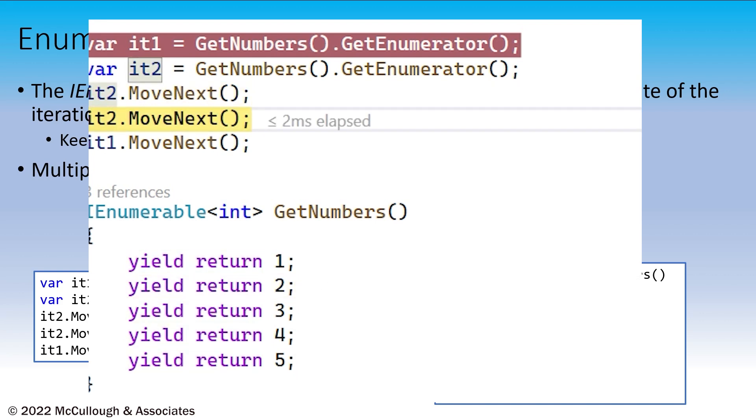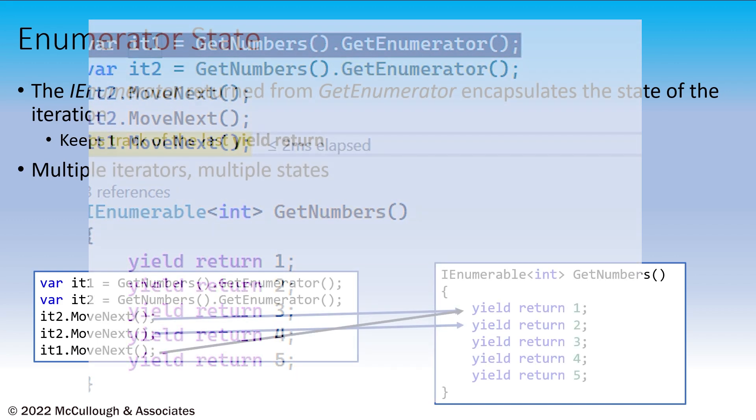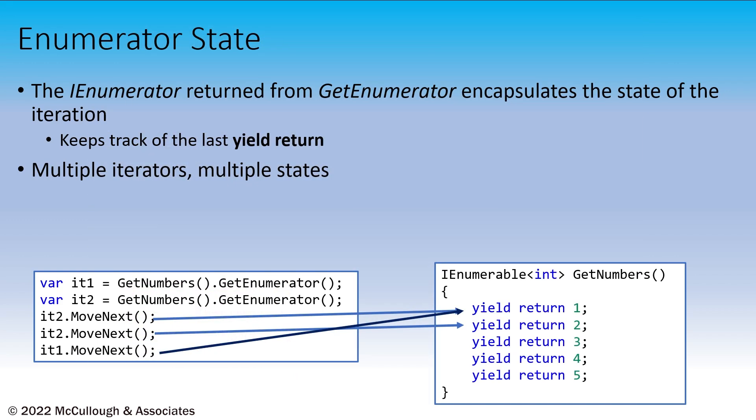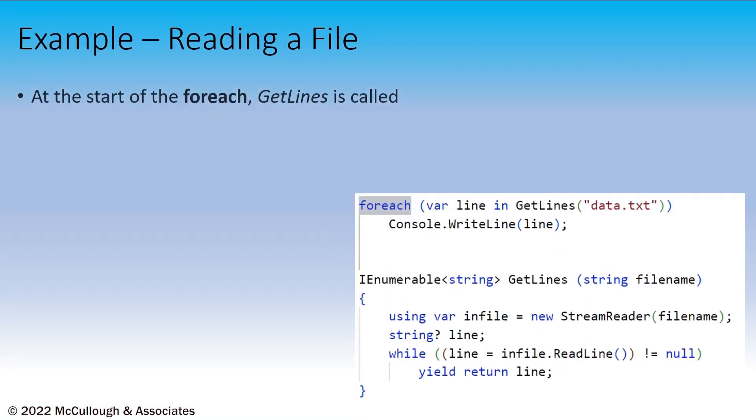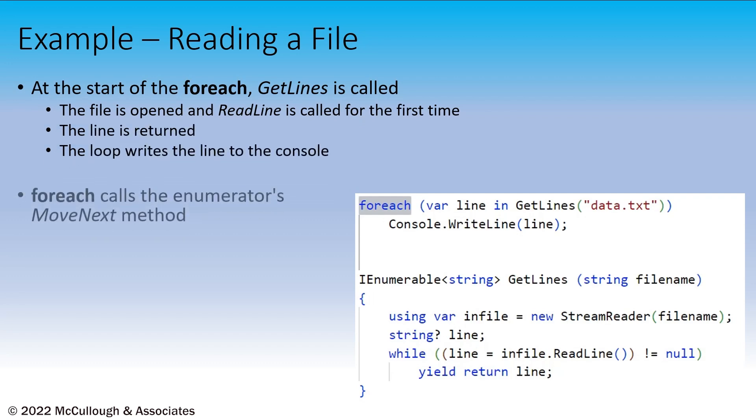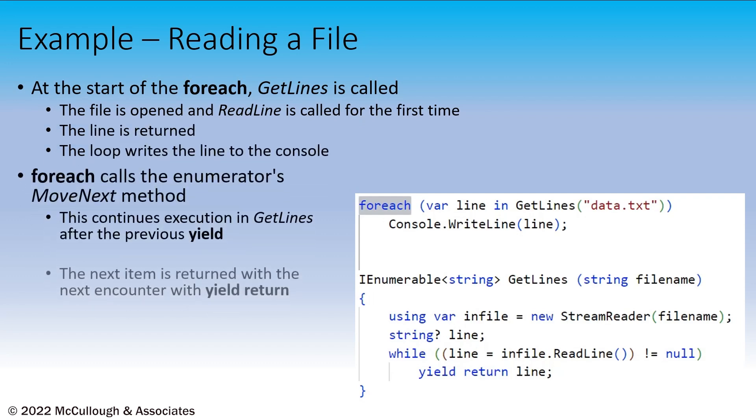If we're creating an array of 5,000 integers and then looping through that entire array each time we use it, it probably won't make much difference whether we create the array in memory, not utilizing yield return, or if we're utilizing yield return. Especially if we're using the array in a bunch of different places in our code, the array version might actually be better. But what if the creation of the array elements is more expensive? Like, let's say we're reading data from a file or a database.